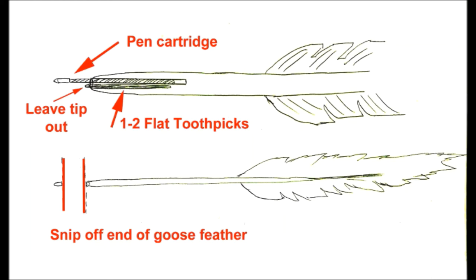All the plastic should be inside, but the metal tip should still be sticking out just a little bit. You'll notice you still have a little play in that circular area at the end of the goose feather.